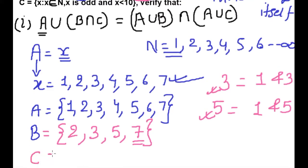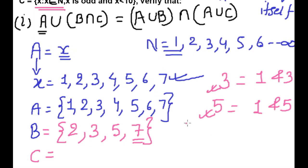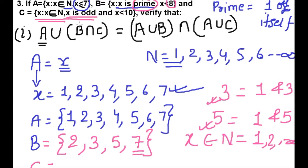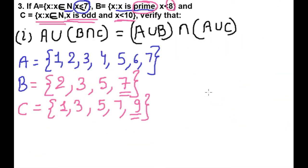Now Set C. C is the set of x where x is an element of natural numbers, and x is an odd number. Odd numbers are those not divisible by 2: 1, 3, 5, 7, 9, 11, and so on. But here the condition is x is less than 10, so we stop at: 1, 3, 5, 7, 9. Therefore C = {1, 3, 5, 7, 9}.